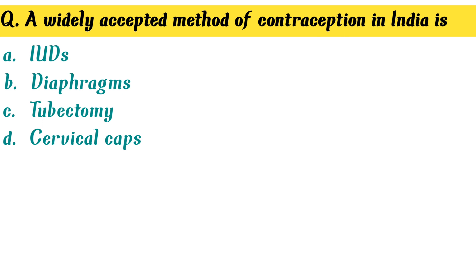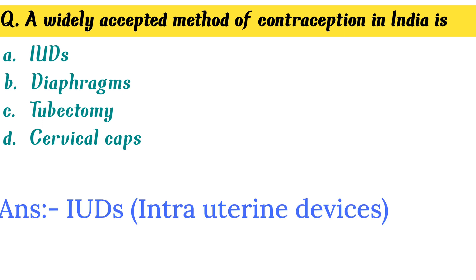A widely accepted method of contraception in India is — Option A. IUDs — Intrauterine devices is the correct answer.